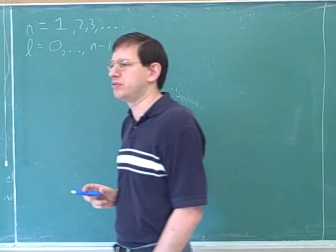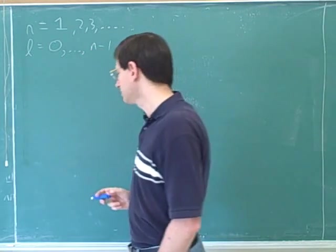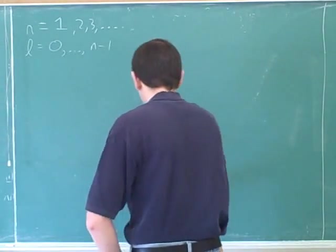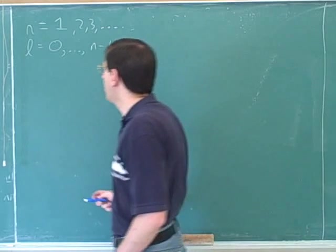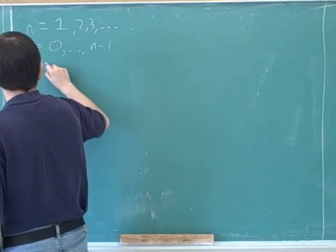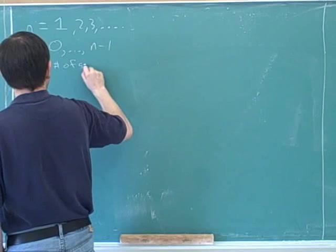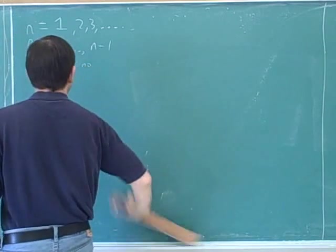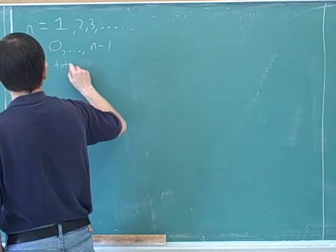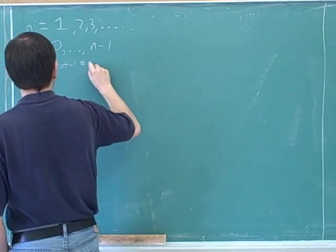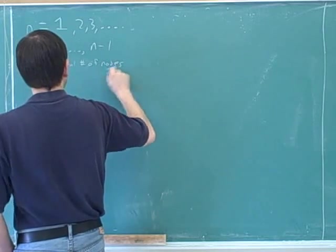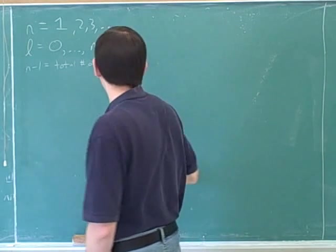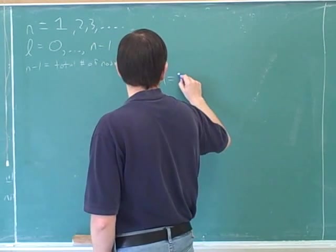And then one, then two, then three, all the way up to N minus one. And then N minus one is the number of just general nodes as well. That's right. So N minus one is the total number of nodes in the orbital. That's good that you know that. So for example, suppose that N equals three. What would be the possible values for L?